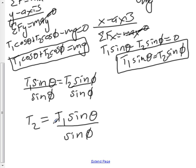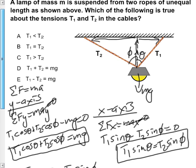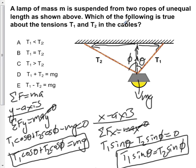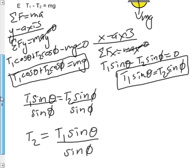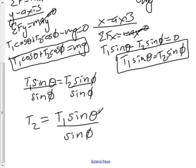This relationship will be very helpful in determining whether or not T1 is greater than or equal to T2 or whatever other relationship they have. If we return to our initial problem, it tells us that we have two ropes of unequal length. So we already know that sin theta is not equal to sin phi.